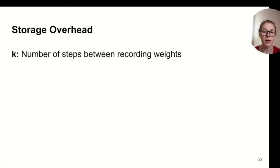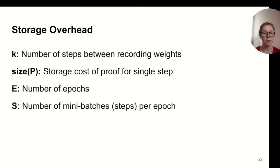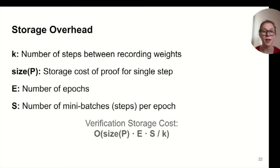We now explore the storage overhead. The storage overhead involves K again, and we denote size(P), the storage cost of the proof for a single step, E, the number of epochs, and S, the number of mini-batches, or steps per epoch. Then we have that the verification storage cost is O(size(P) * E * S / K), where size(P) is the storage for one proof, and E, S over K is the number of proofs in verification.